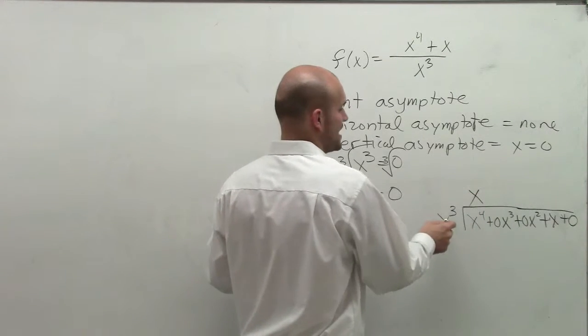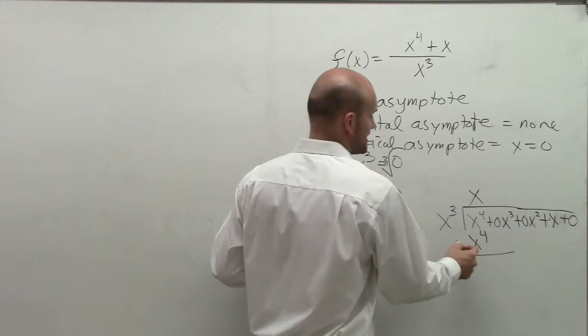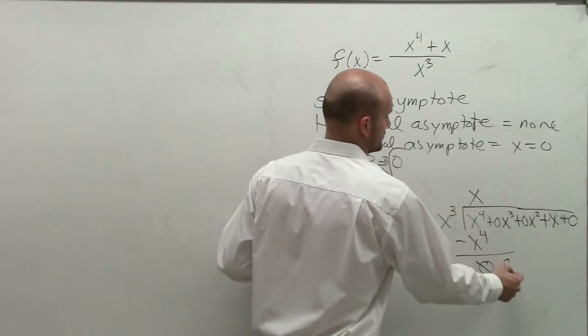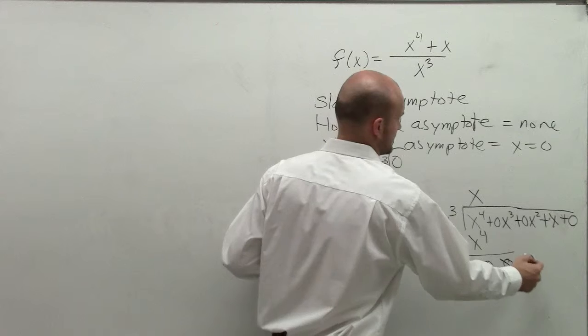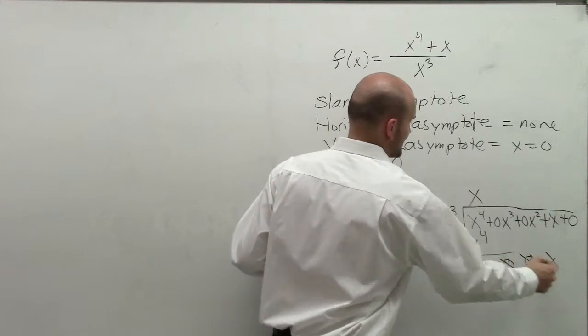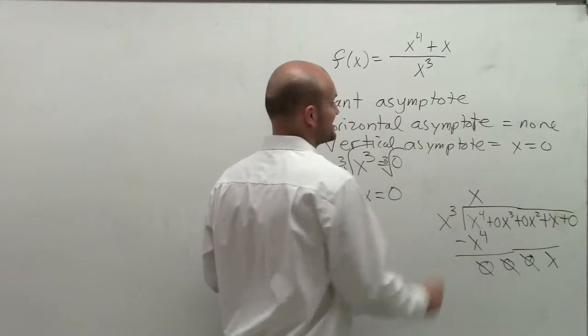x times. x times x cubed is x to the fourth. Subtract my rows, zero, zero, zero, x. X cubed does go into x? No, it does not.